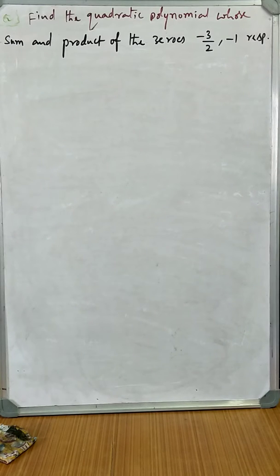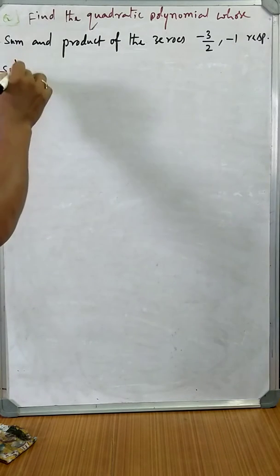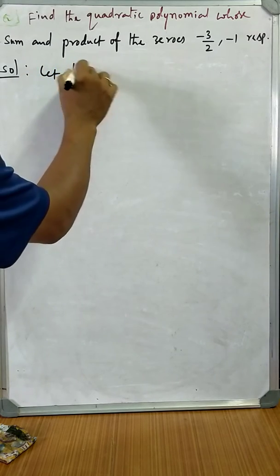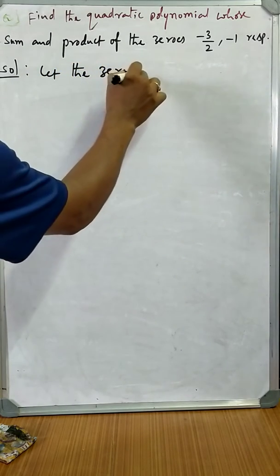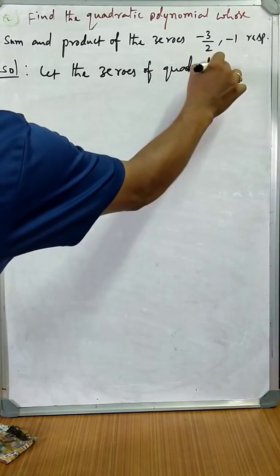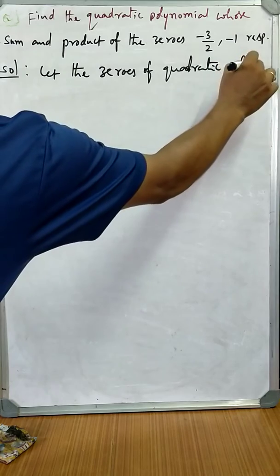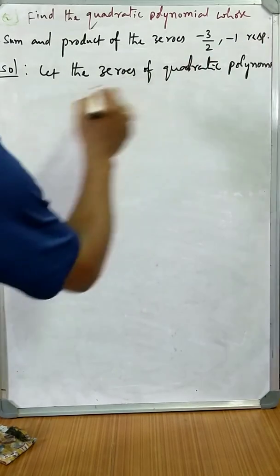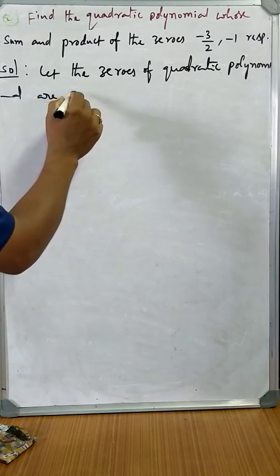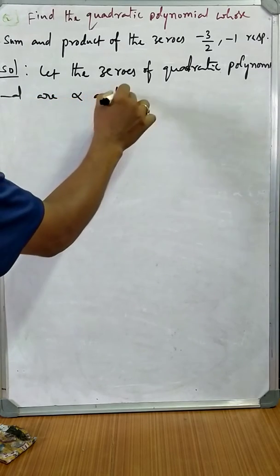Which is very easy if you know the formula. If you are given the sum and product of the zeros, let the zeros of the required quadratic polynomial be alpha and beta.